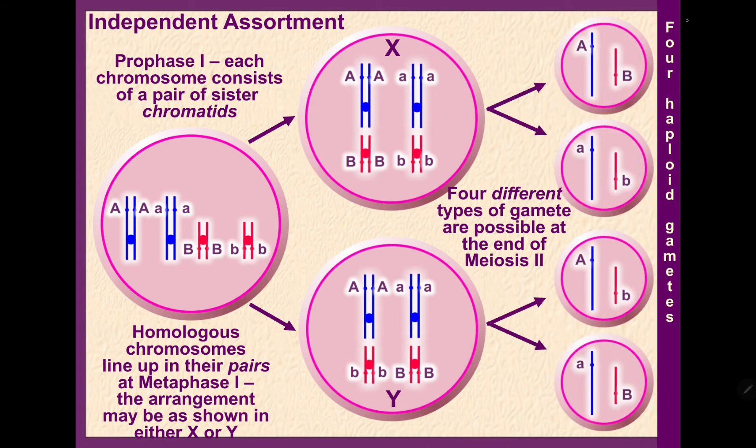Number one, we have the dominant version of A and the dominant version of B. Remember that these are gametes, so there's only one of each type. In our second type, we have recessive A and recessive B. In number three, we have dominant A and recessive B. And in number four, we have recessive A and dominant B.